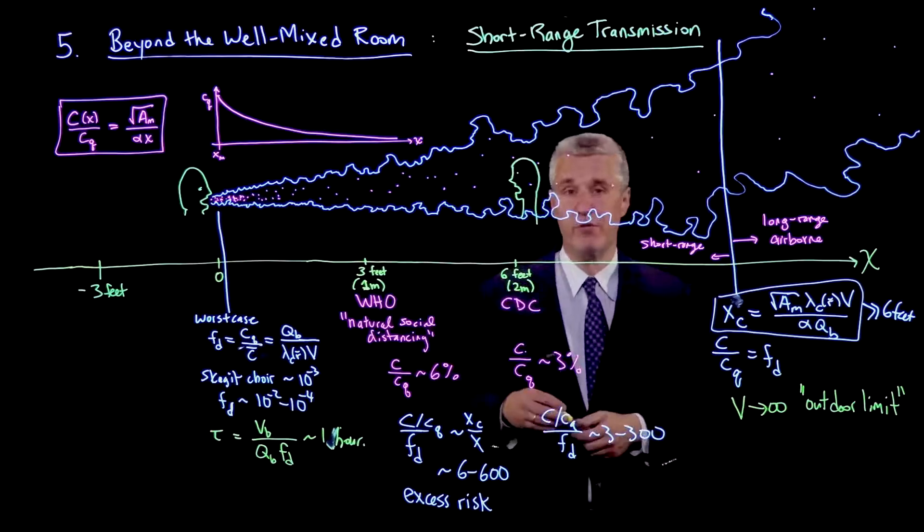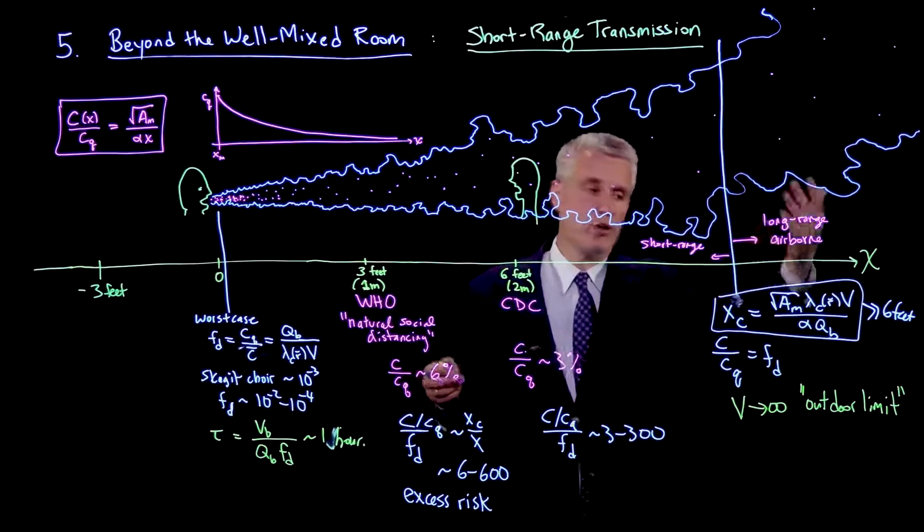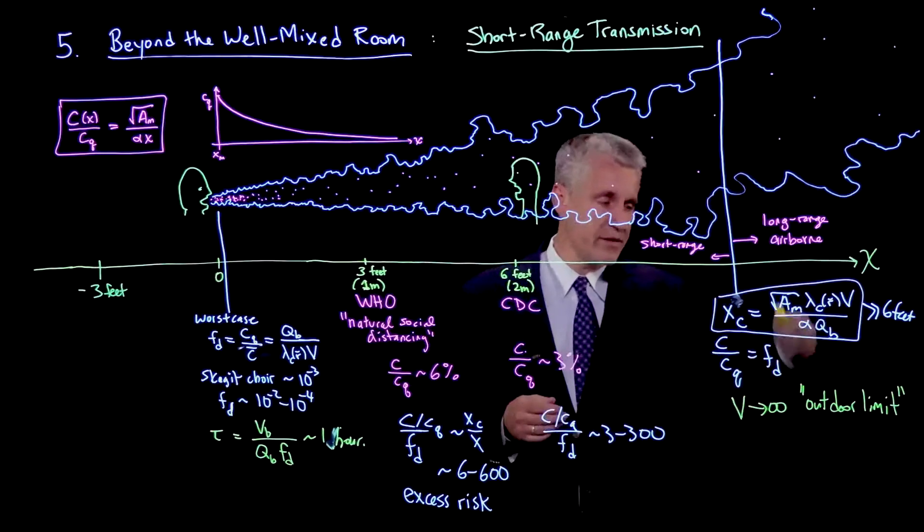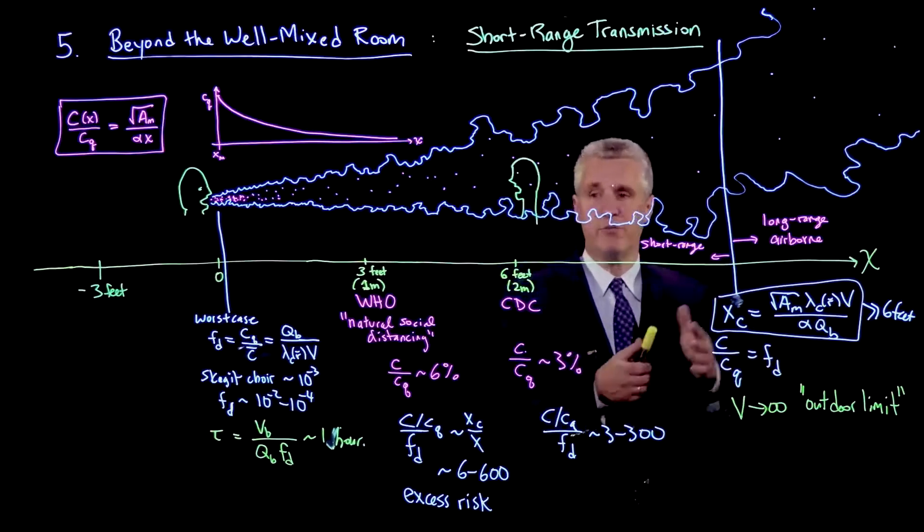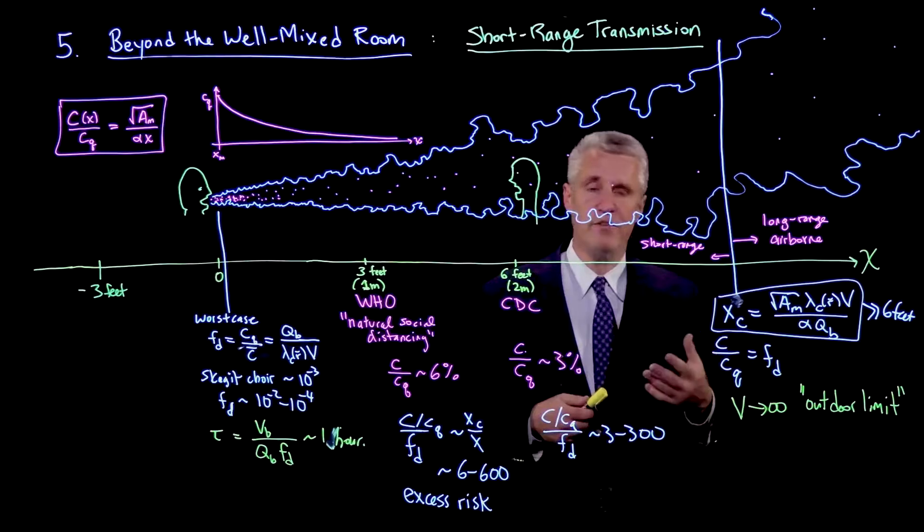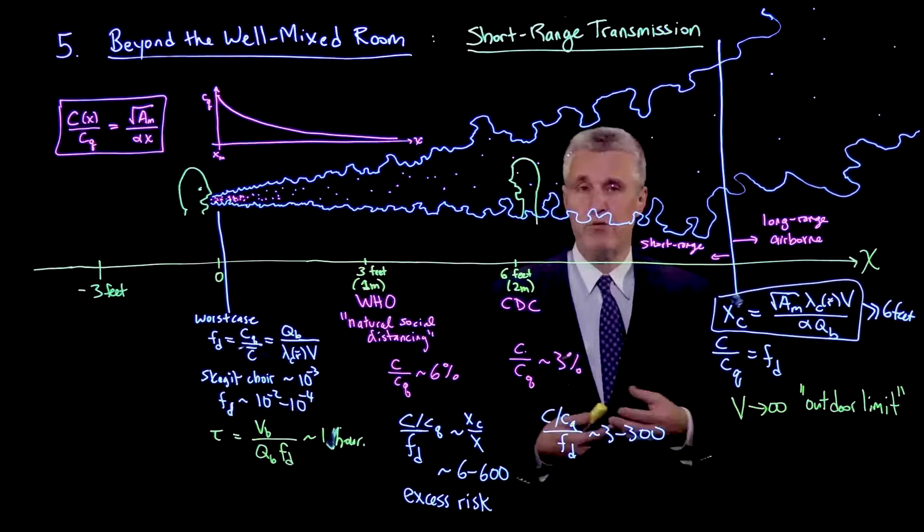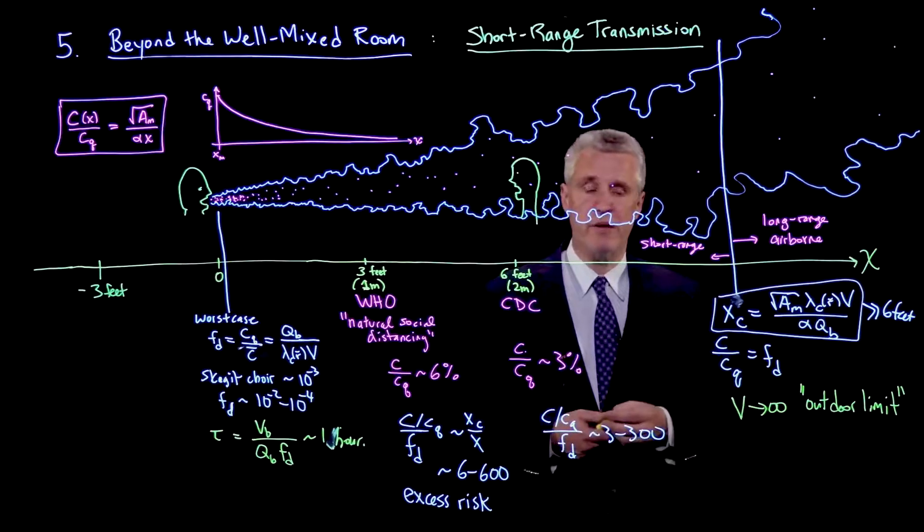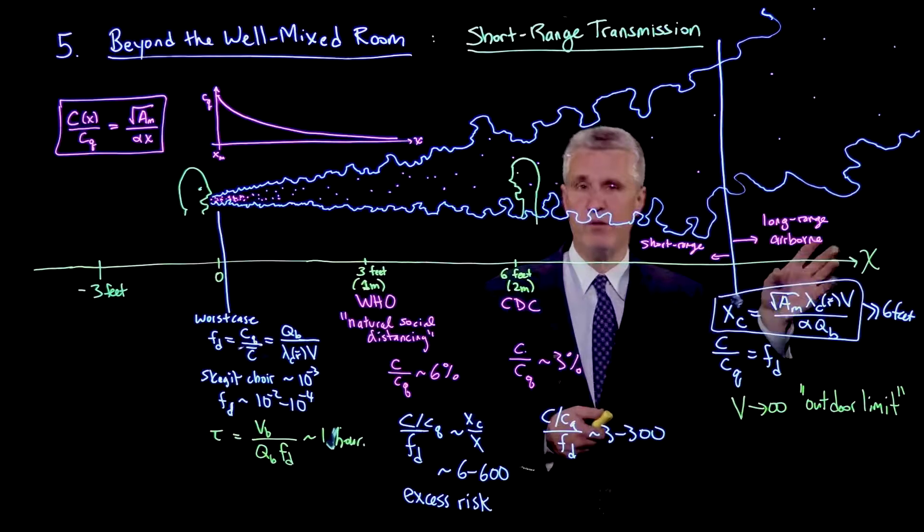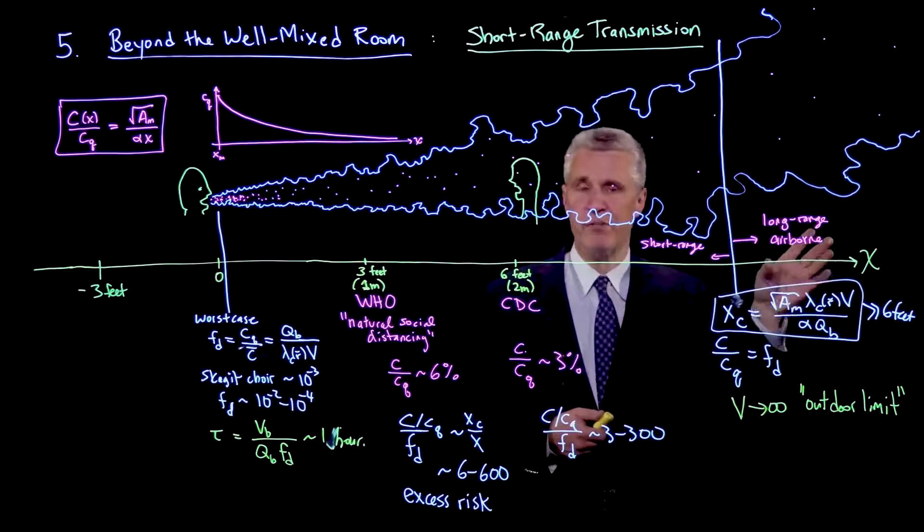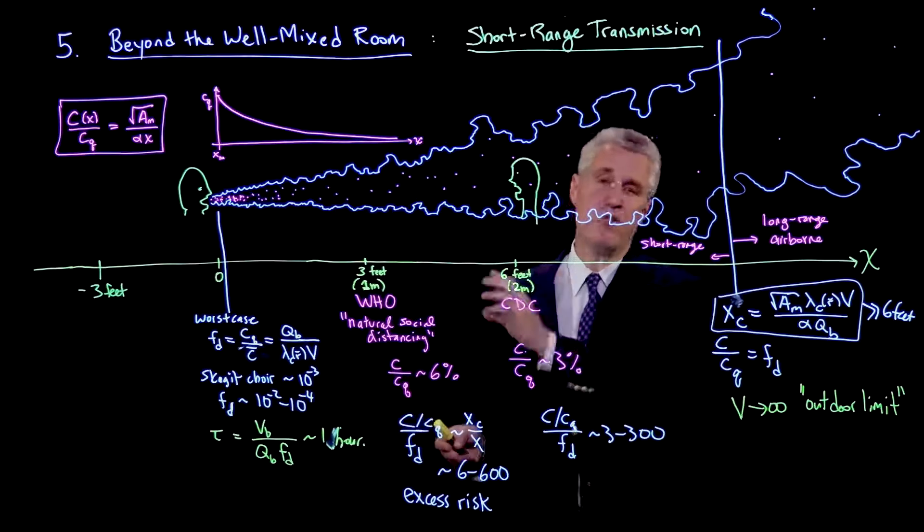Once you get to smaller rooms and longer periods of time, you find that xc is on the order of the room size. Then you really will have significant effects of long-range transmission. I will argue that for most typical rooms we inhabit indoors, the long-range airborne risk is the leading order, first approximation, and best approximation. The short-range risk must be considered, but it's a correction to that.